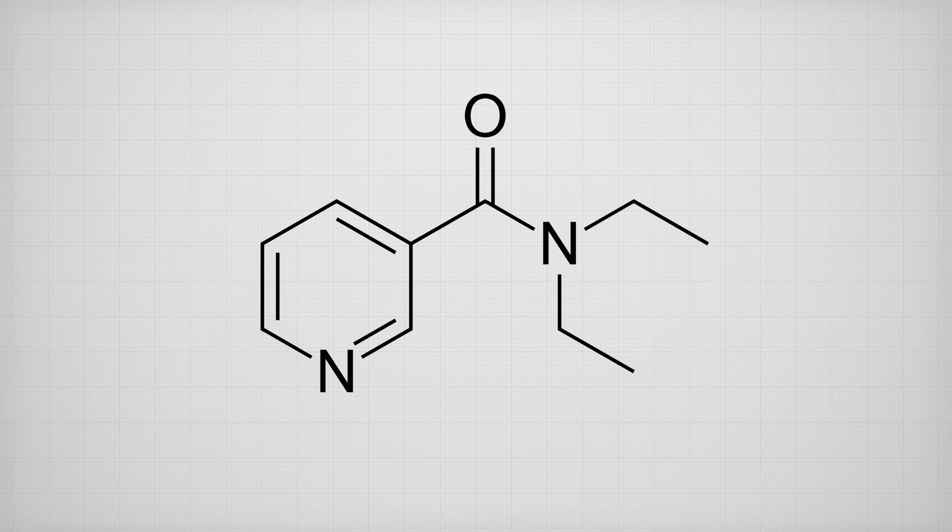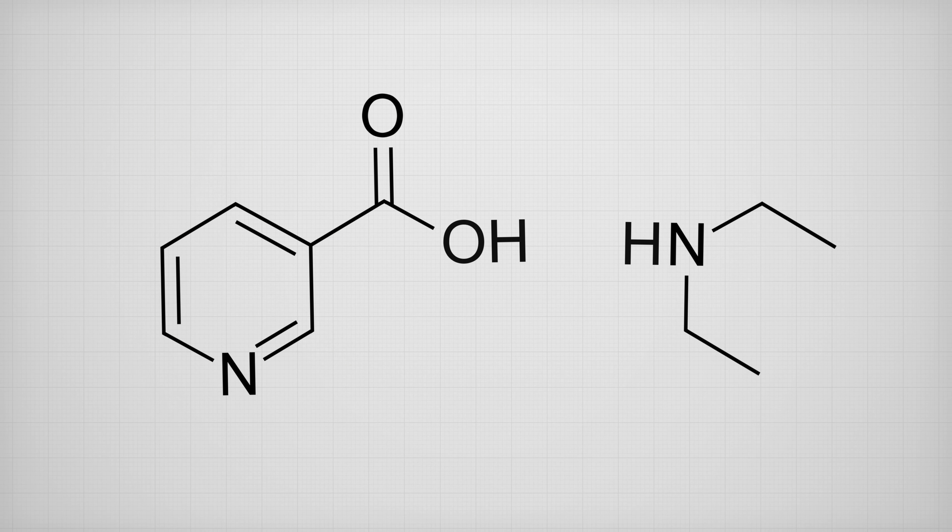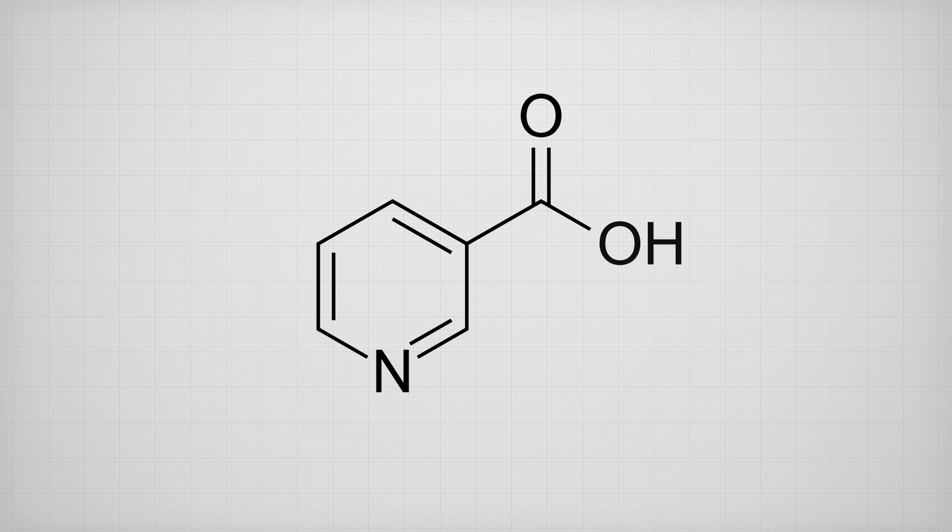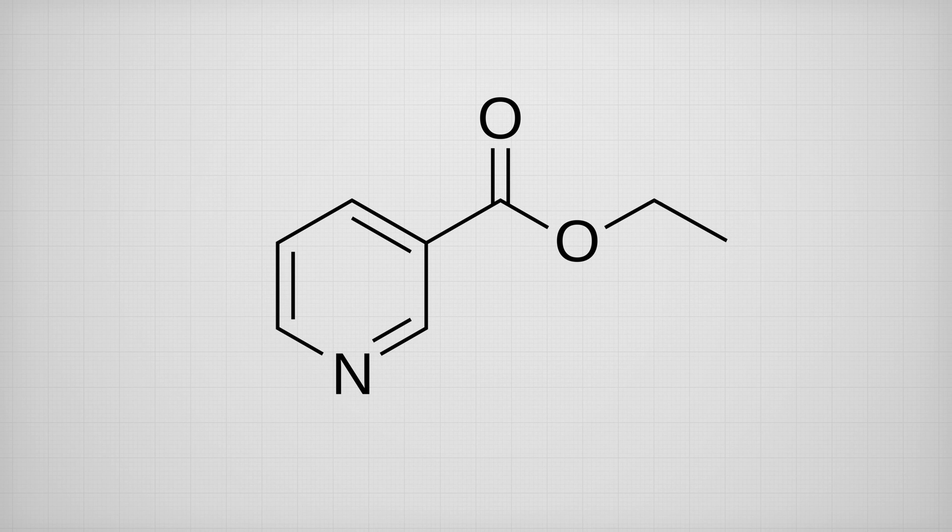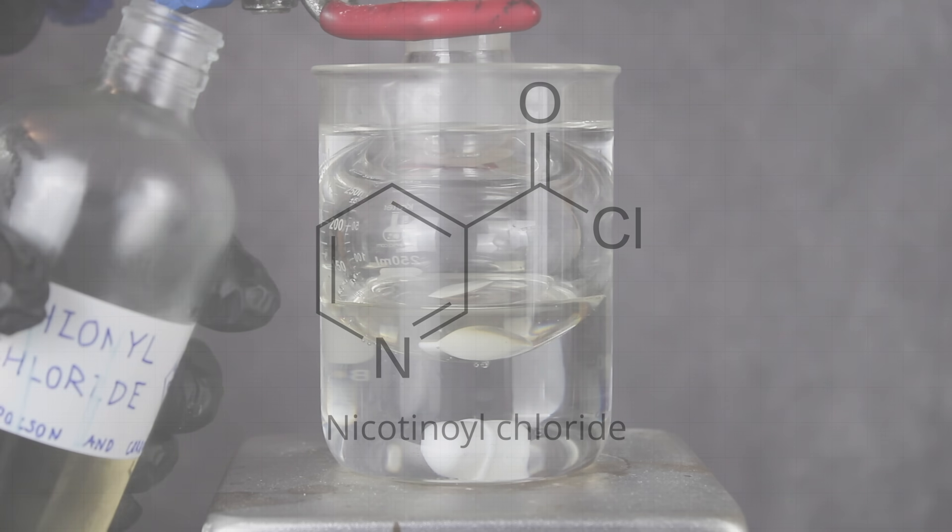Now, nikethamide is an amide made by connecting diethylamine and nicotinic acid. The problem is regular carboxylic acids don't really link up with amines to form amides. They need to be converted into a more reactive species first. An ester like ethyl nicotinate probably would have worked fine, but since I was a doofus and botched the preparation, I decided to go with something much more reactive: nicotinoyl chloride, the acid chloride of nicotinic acid.